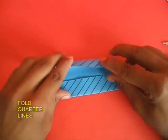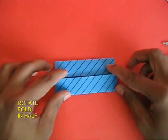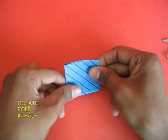Then fold both the doors or the quarter lines. Turn the paper and then fold this again into half.